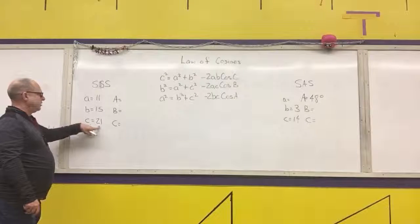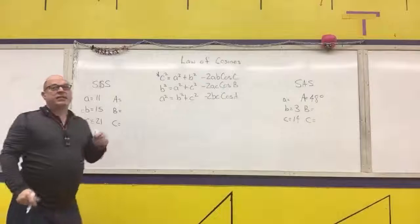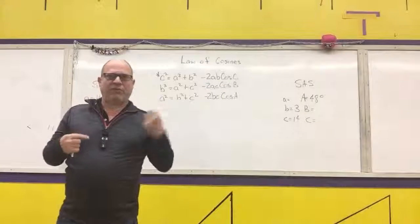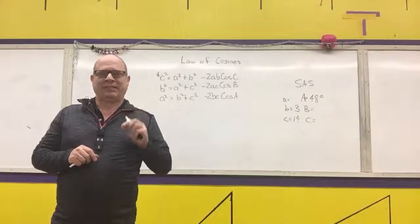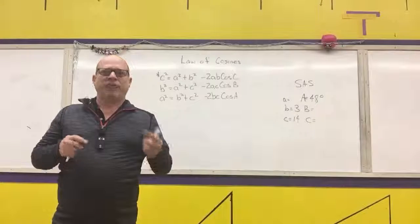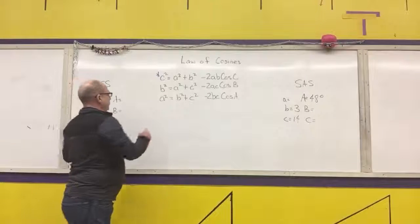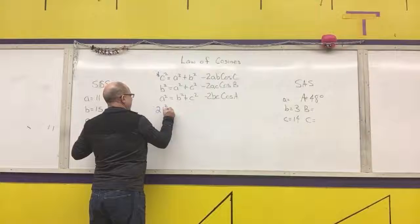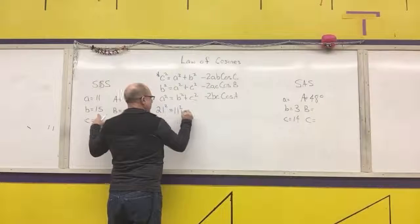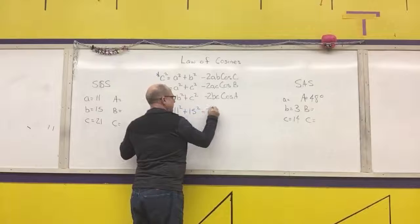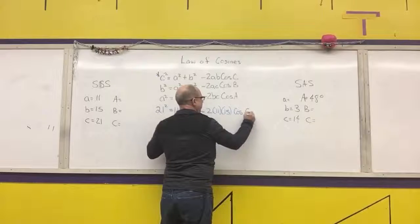Use the form of the law of cosines that has the longest side on the left-hand side. In this case, the longest side is 21, so I'll use that version. There is a lot of algebraic rearrangement here, and you'll have to take an inverse trig function. Take it step by step, nice and slow, so you don't make arithmetic errors. So first I write: 21 squared equals 11 squared plus 15 squared minus 2 times 11 times 15 times the cosine of the angle I'm finding.